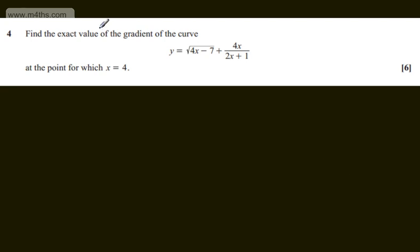In question 4, we're asked to find the exact value of the gradient of the curve y equals the root of 4x minus 7 plus 4x over 2x plus 1, at the point for which x is equal to 4.